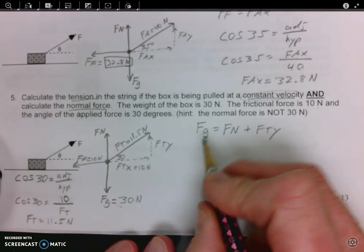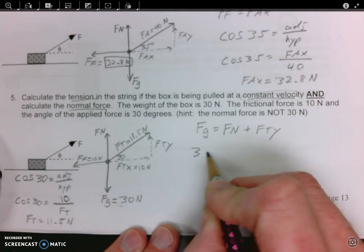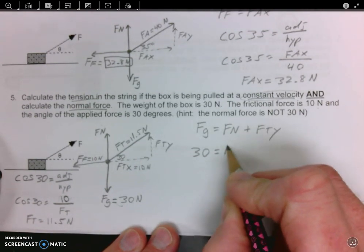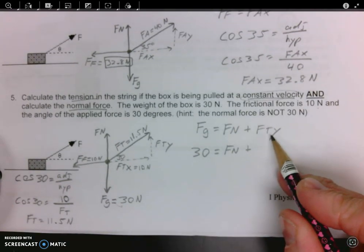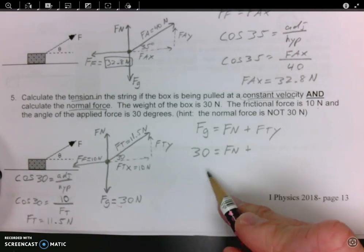So let's write in what we know. We know the force of gravity is 30. We know we're solving for the normal force. All we need now is to know Fty, and we can easily solve for Fn.